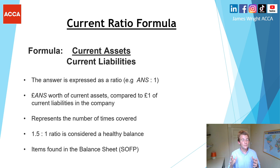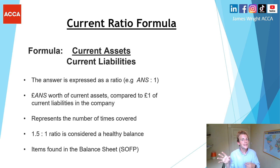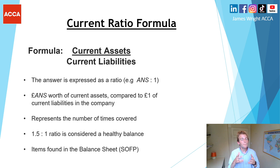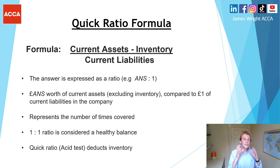Coming on to the current ratio formula: it's current assets divided by current liabilities. 'Current' refers to less than or within one year. The answer is expressed as a ratio — for example, X pounds worth of current assets compared to one pound of current liabilities. It represents how many times we are covering our current liabilities. An ideal current ratio is around 1.5 to 1 for a healthy balance, and these figures are found within the balance sheet, also known as the statement of financial position.